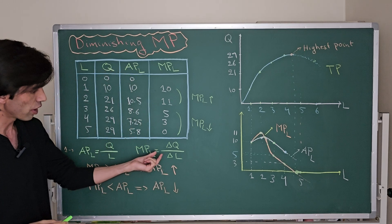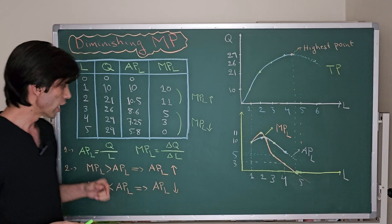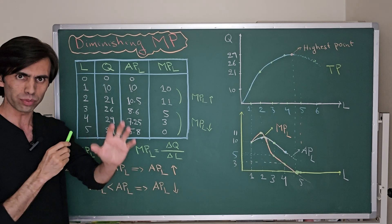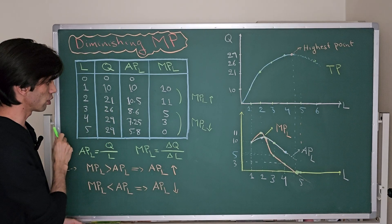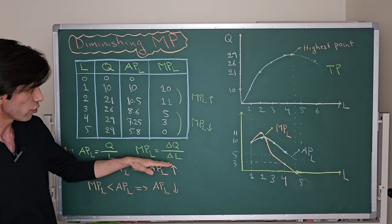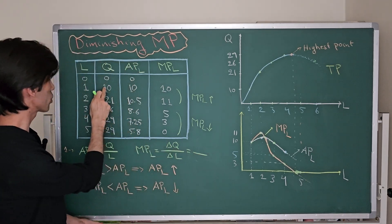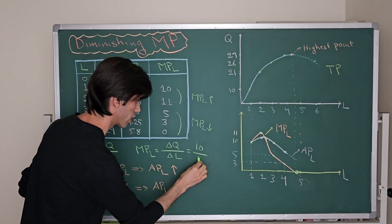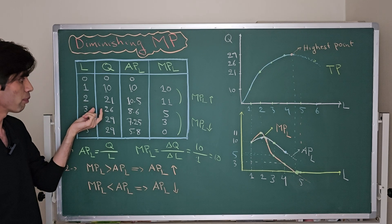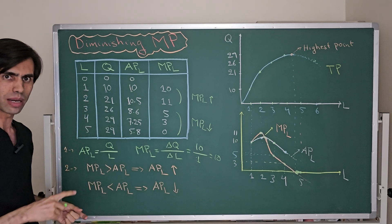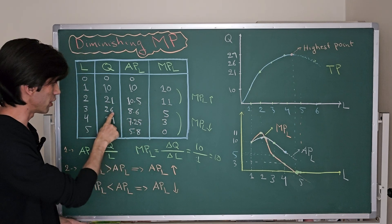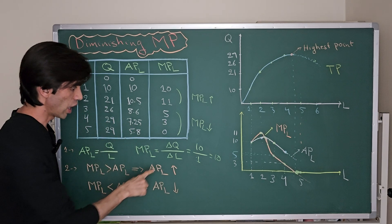The marginal product of labor is equal to the change in quantity of output over the change in number of labor. The change in number of labor in each case is just one. When you have just your first worker and he produces 10 units of output, the change in output is 10 and the change in number of workers is 1, so the marginal product of the first worker is 10. When you hire the second employee, the change in output is 11 and the change in workers is 1, so 11 divided by 1 is 11. Then the change is 5 divided by 1 equals 5, the change is 3 divided by 1 equals 3, and the change is 0 divided by 1 equals 0.